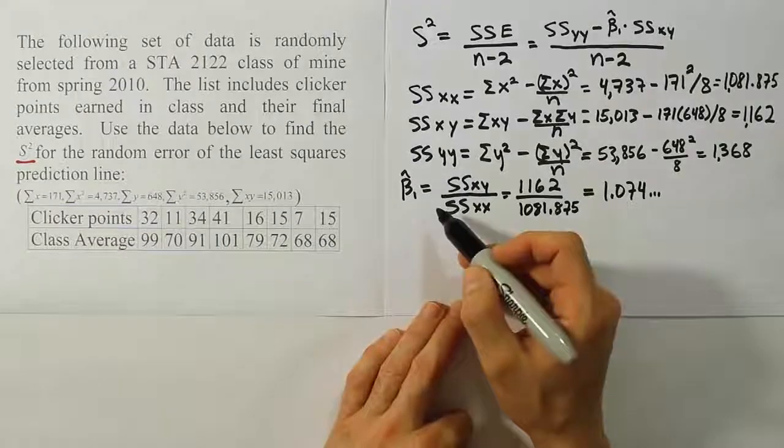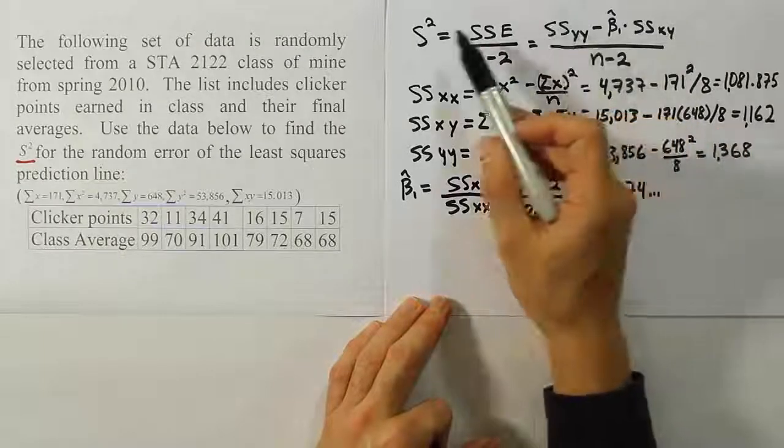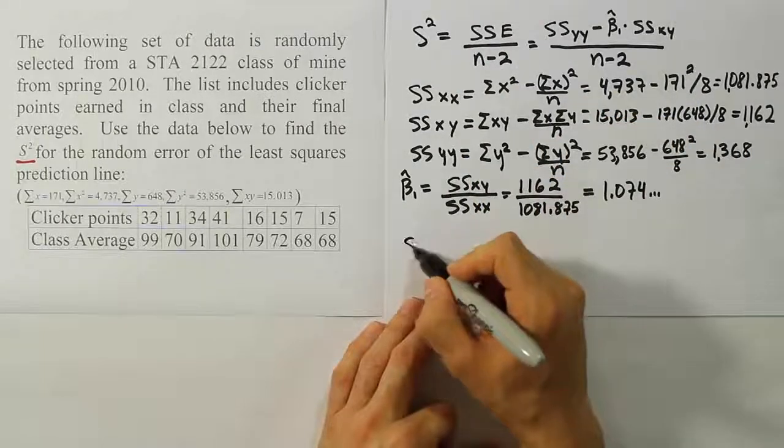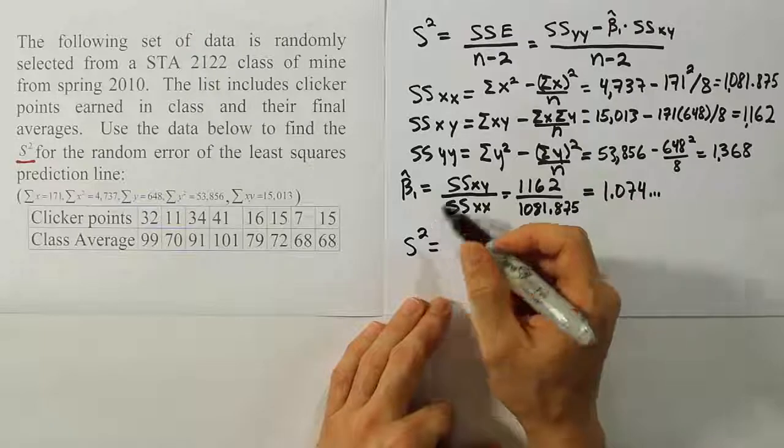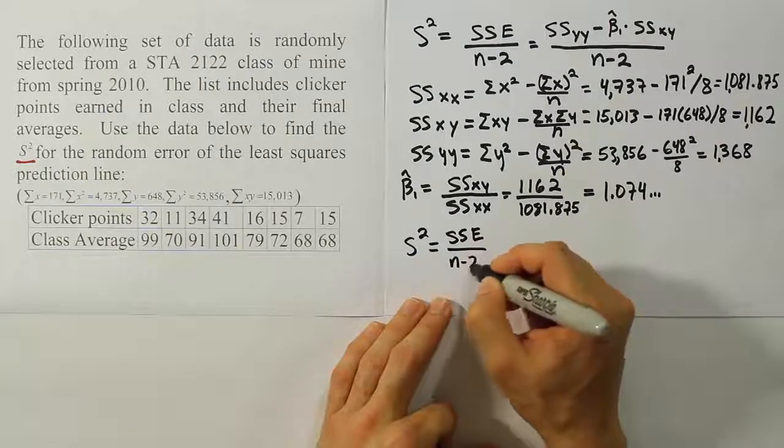Now once we have our beta 1 value, the next step of the process is to plug all that in, all the known values now into the S squared formula. So S squared is equal to SSE, the sum of square for error, over N minus 2.